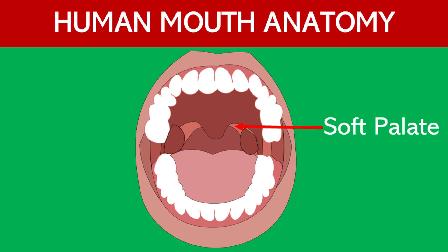Soft palate. The soft palate is the posterior part of the roof of the mouth. It closes off the nasal passages during swallowing to prevent food from entering the nasal cavity.